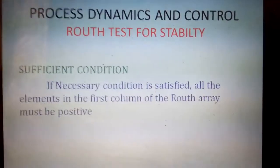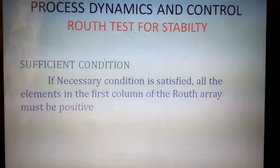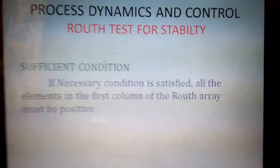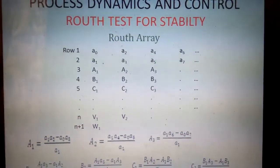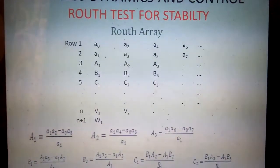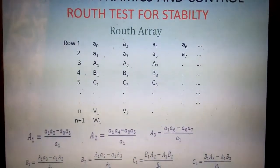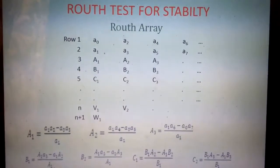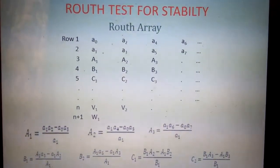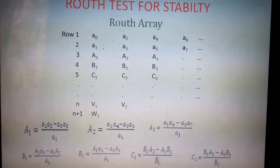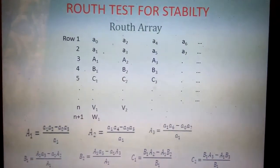The sufficient condition: if all the coefficients are positive, we can construct the Routh array. In the Routh array, if all the elements in the first column are positive, the system is stable. If any one of the elements in the first column is negative, the system is unstable.